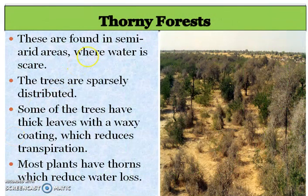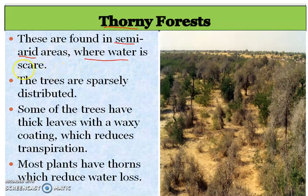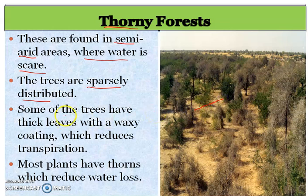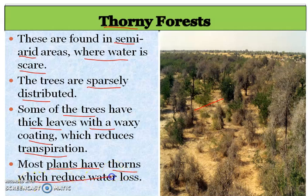Then we have Thorn forests, found in semi-arid areas where water is scarce. The trees are sparsely distributed, meaning they are not very close to each other. Some trees have thick leaves with a waxy coating which reduces transpiration — this is a type of adaptation. Most plants have thorns which also reduce water loss, and that's why they are called Thorn forests.